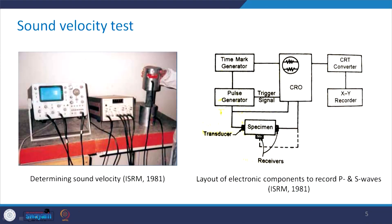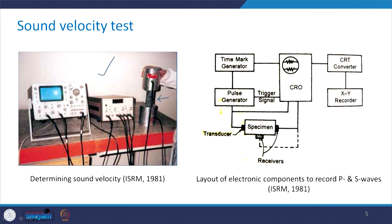This is the layout of electronic components to record P and S waves, and this is the picture of the setup taken from ISRM 1981. You can see that the specimen has been mounted between the two transducers — one is where the pulse is hitting the specimen, then it travels through the specimen and is received at the other end.